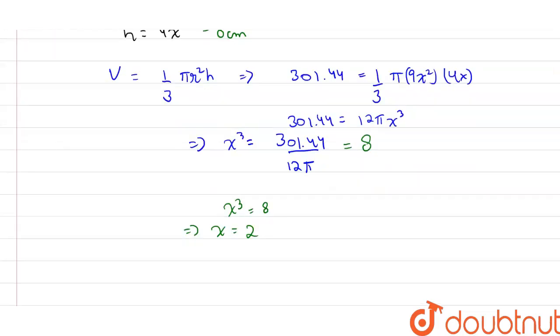To find the slant height, we know that the slant height l = √(r² + h²). In this case, it would be √(36 + 64) = √100 = 10 cm.